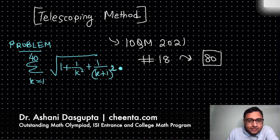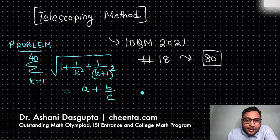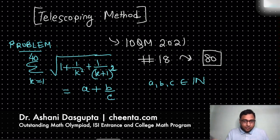This is given to be equal to a plus b over c, where a, b, c are positive integers. So a, b, c are positive integers or natural numbers and b/c is in the reduced form.